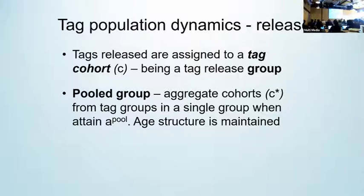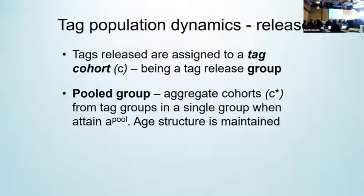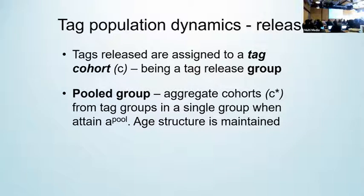The tag population is separated into two components. Firstly, you have the tag cohort that's created at the time of the release event. Then, after a user-defined specified number of periods for the time at liberty, the tag group is placed into a single aggregate pooled tag group, wherein the age structure is maintained. This step of taking a certain number of tagged fish after a period of time at liberty and putting them into a single pooled group over all of the tag release groups is so as to optimize the calculation. Otherwise, one may have senescent populations of tagged fish running for an endless period of time, really slowing down the operation of the code.